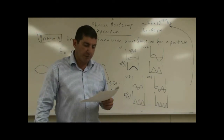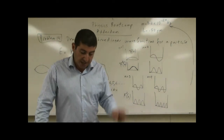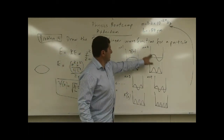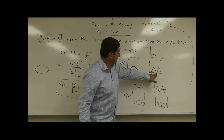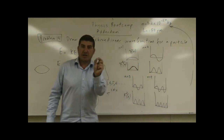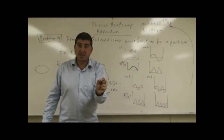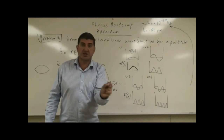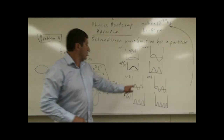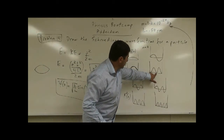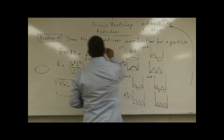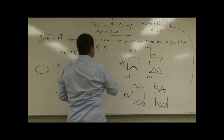Part A asked: what is the probability that the particle is in the middle of the box in the second state? In the second state, look at the middle of the box — the probability density is 0. Even with an uncertainty of dx, 0 times any dx is 0, so the answer to part A is 0.